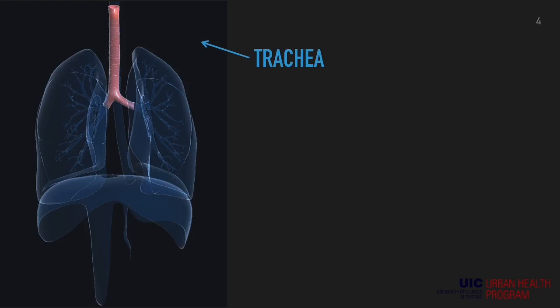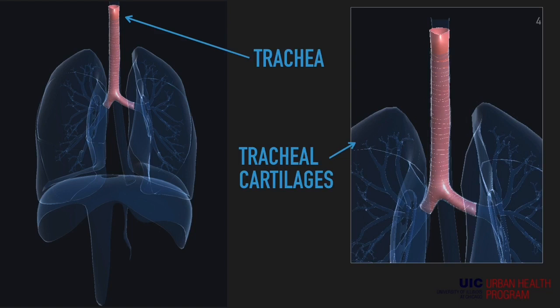The picture to the left is the trachea. As we inhale air from our nose and our mouth, it makes its way down the trachea. We also want to note the tracheal cartilages outside of the trachea.